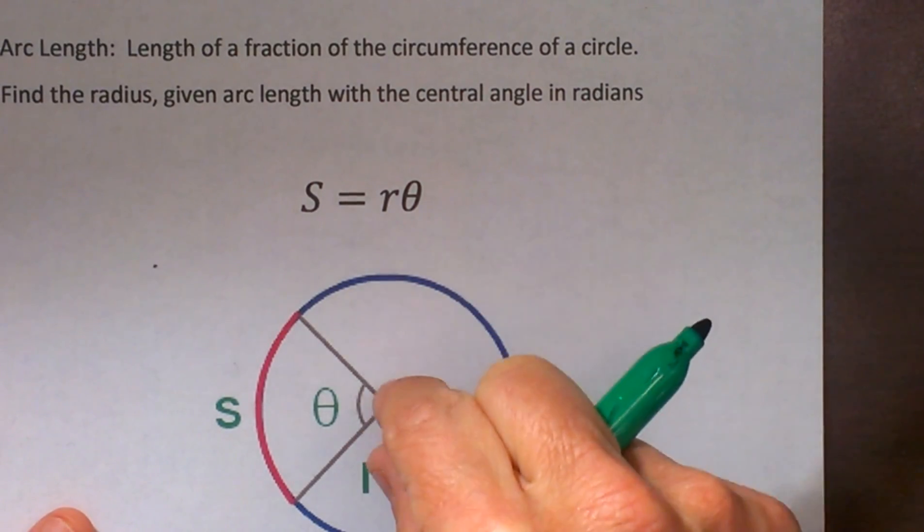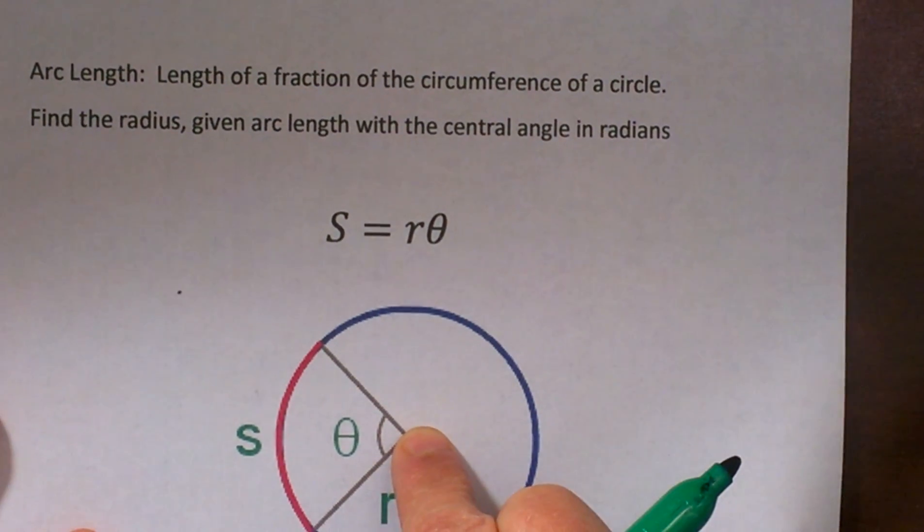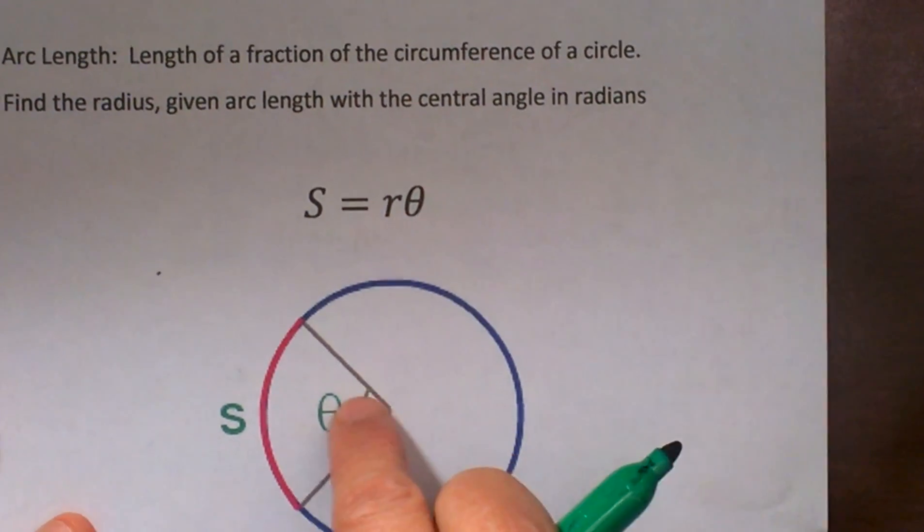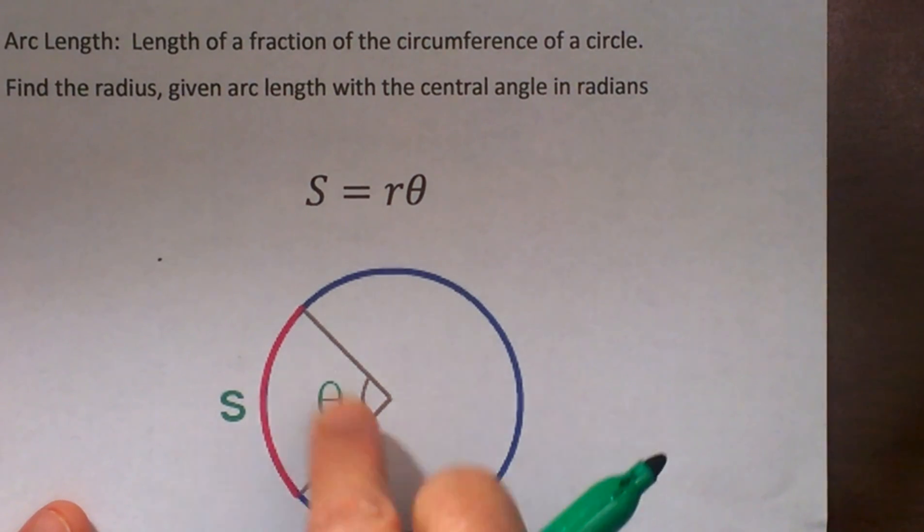It is related back to the central angle. So what we have to do is we need to know the central angle and that angle can be measured in two different ways. It can be measured in radians or degrees.